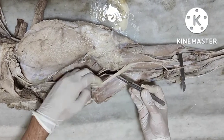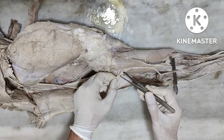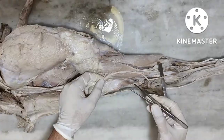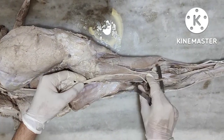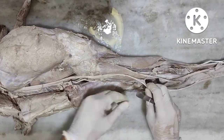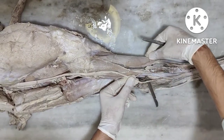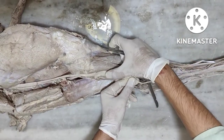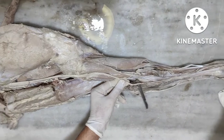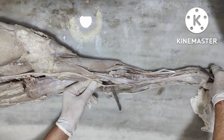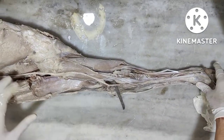The peroneal nerve divides into a deep branch and a superficial branch. Both the superficial and deep branches continue distally to the digits to form the proper digital nerves.